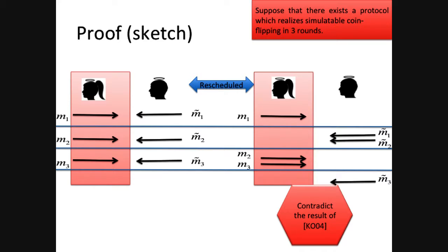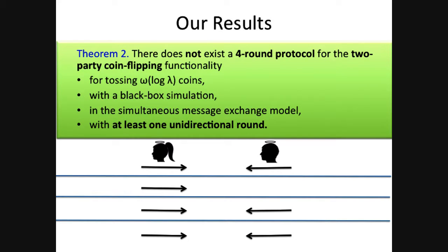This proves our theorem that there does not exist a three-round protocol for coin tossing. We also showed that in a 4-round protocol, you cannot have even one unidirectional round — everybody must send a message in each round.